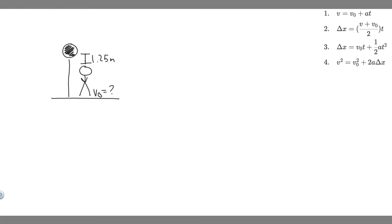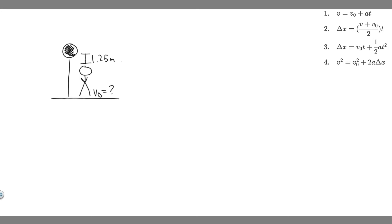In this problem, we're told a basketball referee tosses the ball straight up for a starting tip-off. At what velocity must a basketball player leave the ground to rise 1.25 meters above the floor in an attempt to get the ball? The first thing you always want to do is draw what's going on. The referee tosses the ball up, and the basketball player wants to rise 1.25 meters above the ground to grab or hit the ball to his teammate.